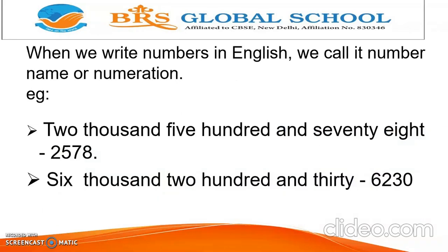When we write numbers in English, we call it a number name or numeration. For example, 2578 is written as two thousand five hundred and seventy-eight. 6230 is written as six thousand two hundred and thirty.